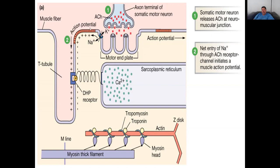The action potential travels down the transverse tubule until it reaches what we call a DHP receptor, a protein and receptor that opens a channel on the sarcoplasmic reticulum, allowing calcium to flow in. The calcium attaches to the troponin, moves the tropomyosin out of the way, and allows the myosin heads to grab onto the actin, beginning the contraction process — going from a relaxed state to the rigor state and then ultimately the power stroke.